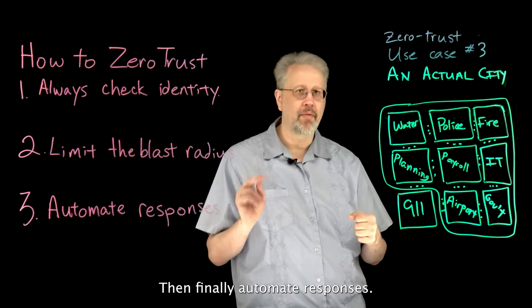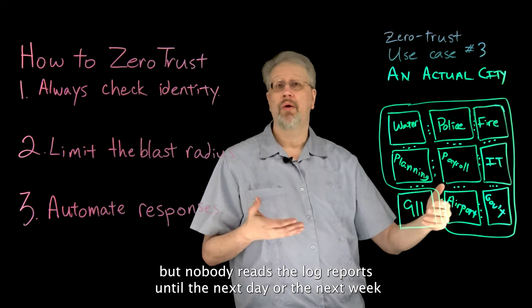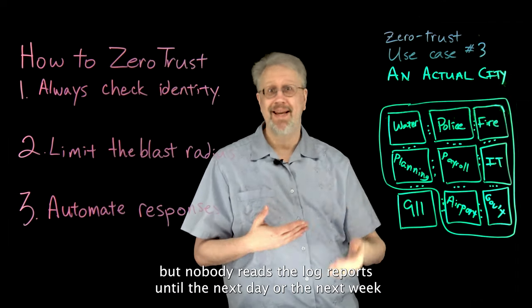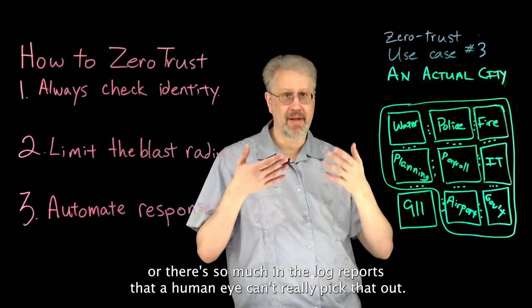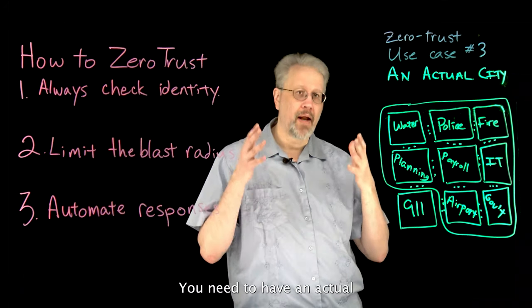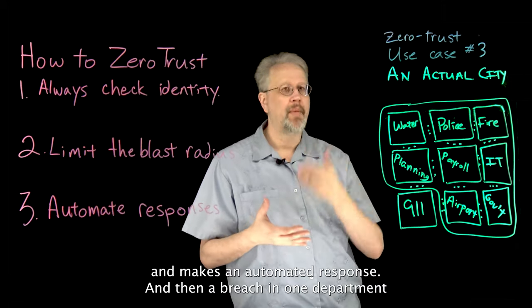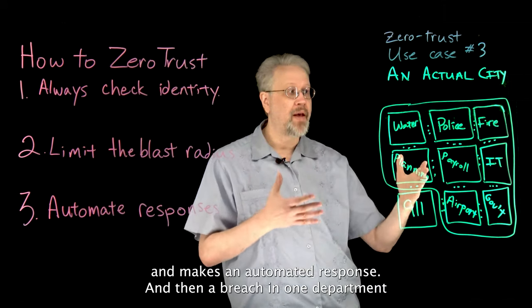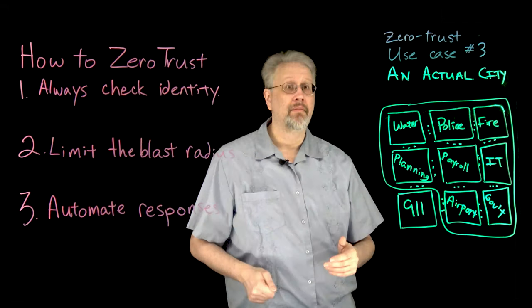Finally, automate responses. Someone could break in and be detected, but nobody reads the log reports until the next day or the next week, or there's so much in the logs that a human eye can't pick it out. You need an actual digital system that reads the digital data and makes an automated response. Then a breach in one department is not a breach in all departments. Make sure you do zero trust security.